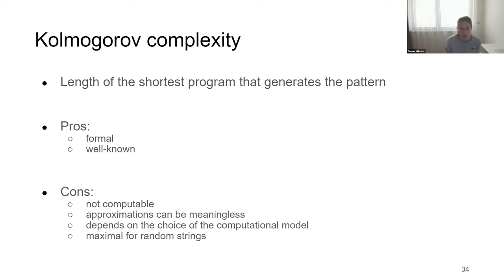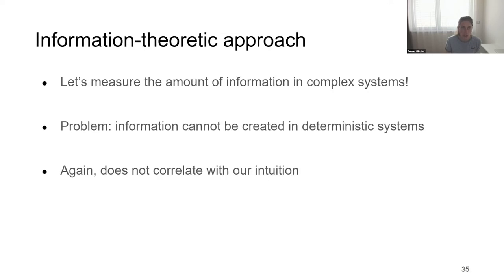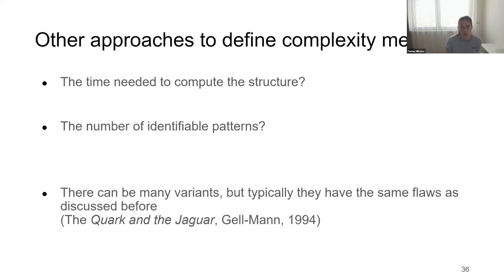Kolmogorov complexity is a nice idea but not very applicable here. With an information-theoretic approach, we can try to measure information in complex systems, but deterministic systems like the Game of Life seem to grow more complex over time even though the amount of information is fully specified in the starting state and transition table — the information isn't actually increasing. There's a nice book on complexity metrics called 'The Quark and the Jaguar' by Murray Gell-Mann if you're interested.